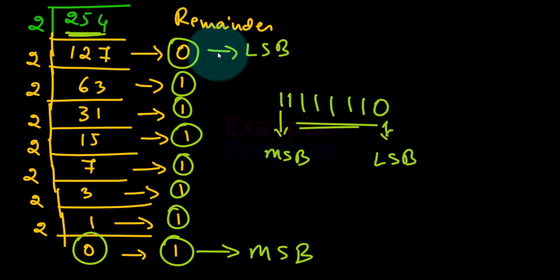This is how we can convert a number from decimal to binary using the repeated division by 2 method. If you like this video hit the like button, if you don't hit the dislike button, and if you want to say something write it in the comment box. For more tutorials like this, subscribe to the channel. Thank you for watching, I will see you in the next video.